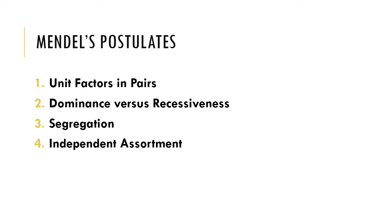It was Mendel who formulated these four postulates, which became the foundation for Mendelian inheritance. These postulates include unit factors in pairs, dominance versus recessiveness, segregation, and independent assortment. What do these postulates mean? How important are these in understanding the most basic pattern of inheritance? Let us now take a look at how Mendel defined the postulates he formulated.